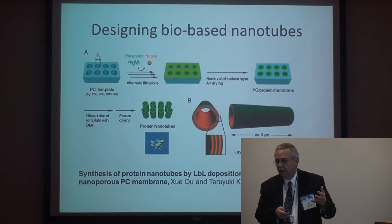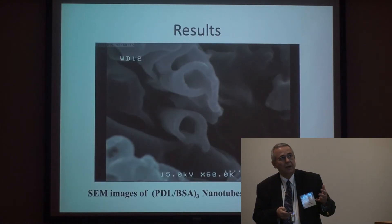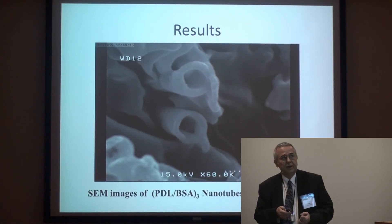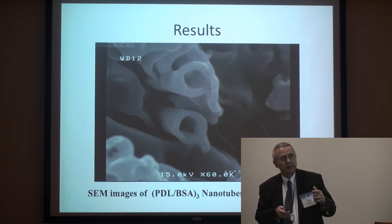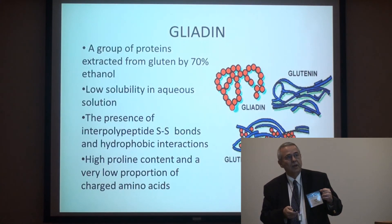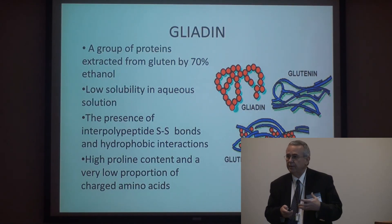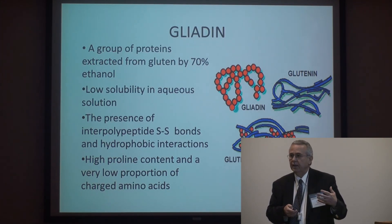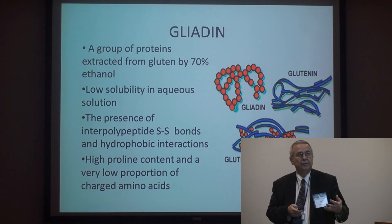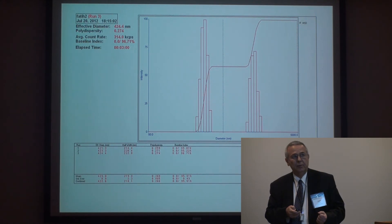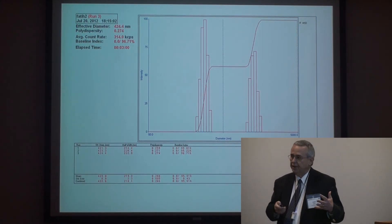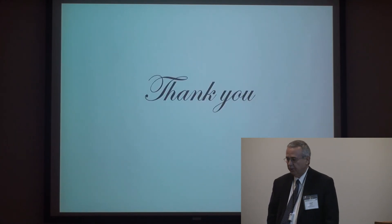In other areas, we are focused on the formation of bio-based nanotubes. You can see here nanotubes that we have created using BSA and polylysine, which is a cationic biopolymer. Finally, we are very much interested in creating nanoparticles from food proteins like gliadin and BSA. You've seen examples with Zein to encapsulate various bioactive compounds, and with gliadin we're able to do that as well. That gives you a quick overview of the kinds of things we've been doing in our lab.